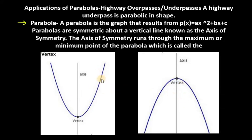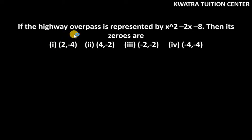Now we can see what questions are being asked on this basis. It says if the highway overpass is represented by x²-2x-8, then its zeros are. So how can we find zeros?